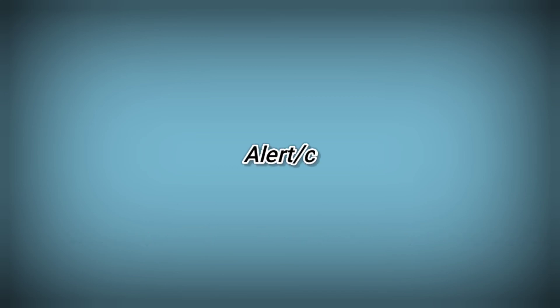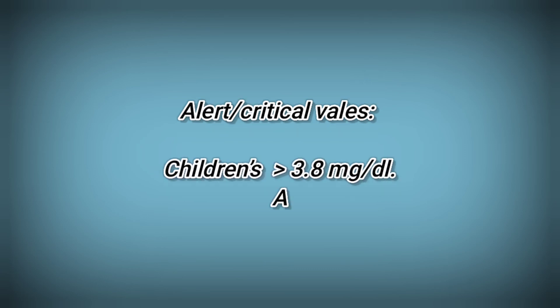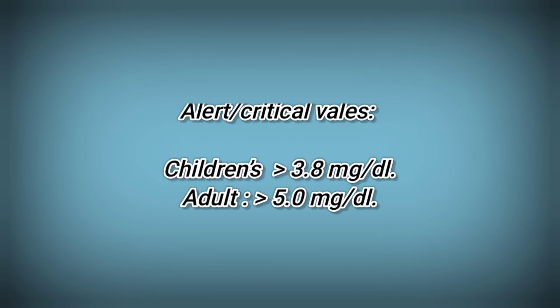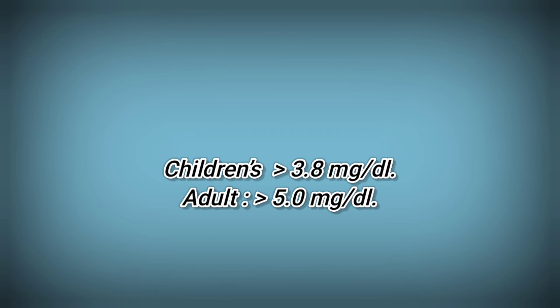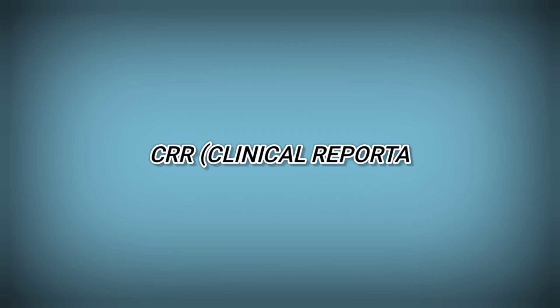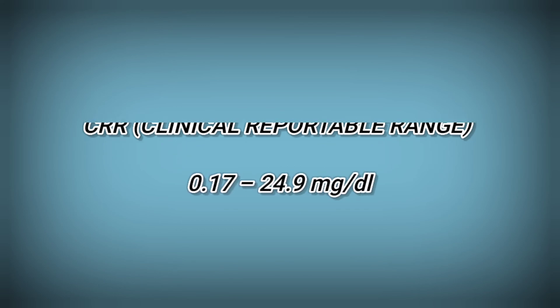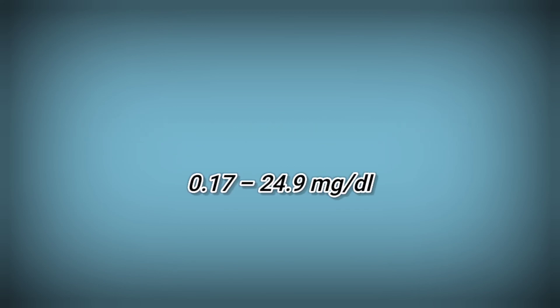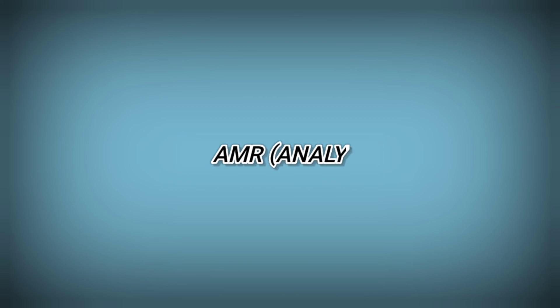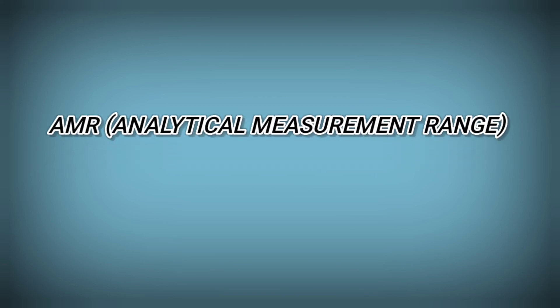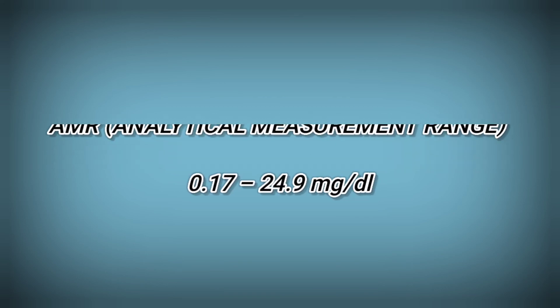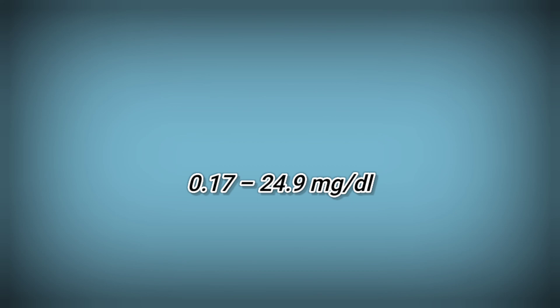Alert/critical values: children more than 3.8 mg/dL; adults more than 5.0 mg/dL. Clinical reportable range (CRR): 0.17 to 24.9 mg/dL. Analytical measurement range (AMR): 0.17 to 24.9 mg/dL.